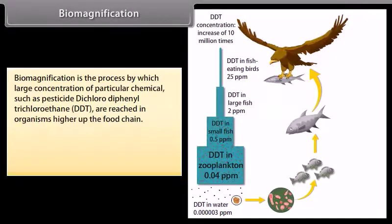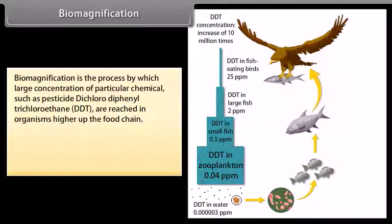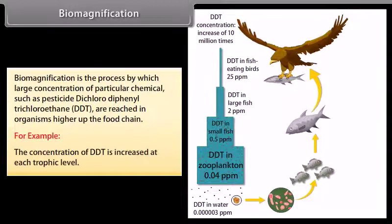Biomagnification is the process by which large concentrations of a particular chemical — such as the pesticide dichlorodiphenyl trichloroethane (DDT) — are raised in organisms higher up the food chain. For example, the concentration of DDT is increased at each trophic level, as shown in the diagram.